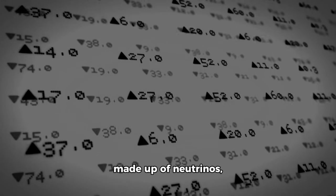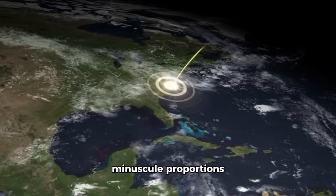The remaining tiny percentages are made up of neutrinos, antineutrinos, and photons, despite their minuscule proportions.